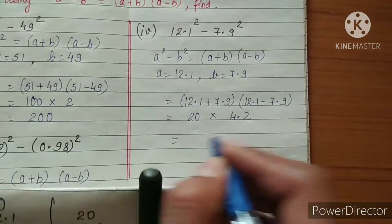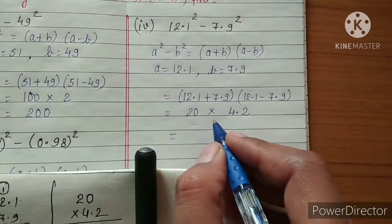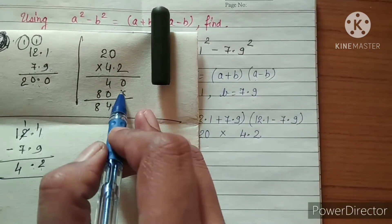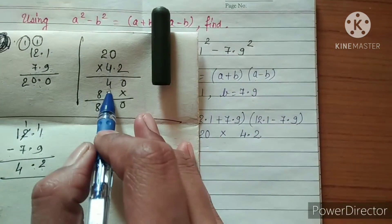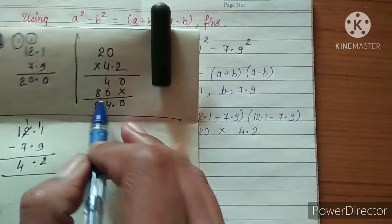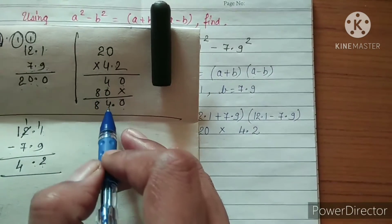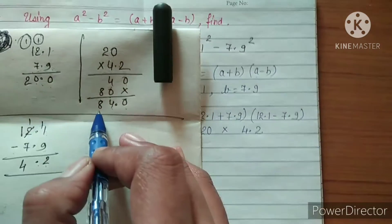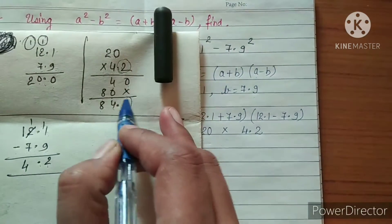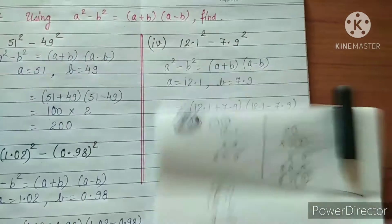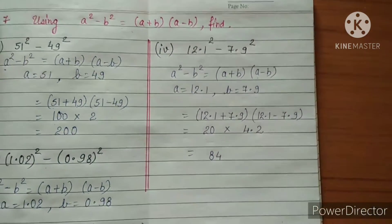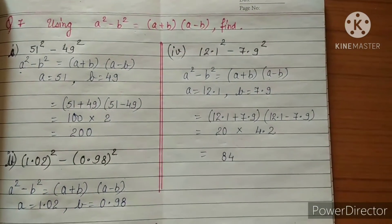We multiply 20 by 4.2: 2 zeros is 0, 2 twos are 4; 4 zeros is 0, 4 twos are 8. Adding with place values: 4 plus 0 is 4, 8 as it is. After the decimal there is 1 value, so we leave 1 value, giving the answer 84. This is the solution of question number 7.